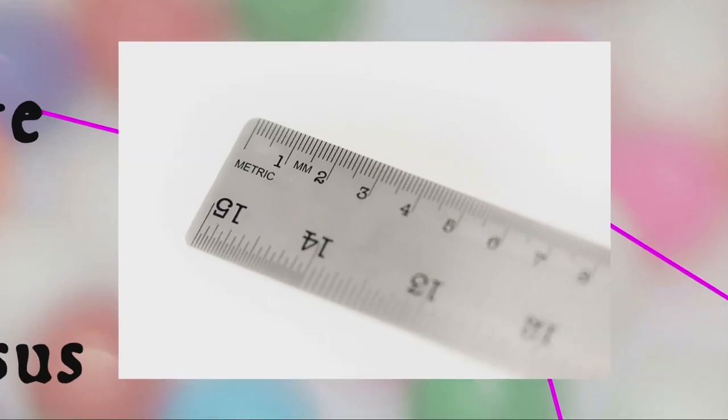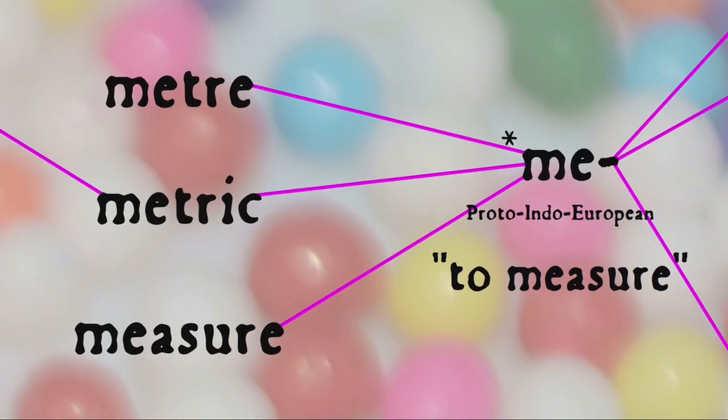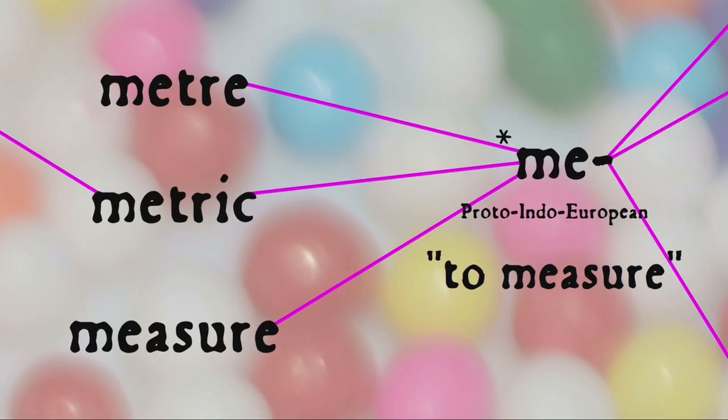I've mentioned the metric unit of measurement, the metre, a number of times, and that's where this linguistic reckoning brings us next. Meter, metric, and measure all come from the same Proto-Indo-European root,